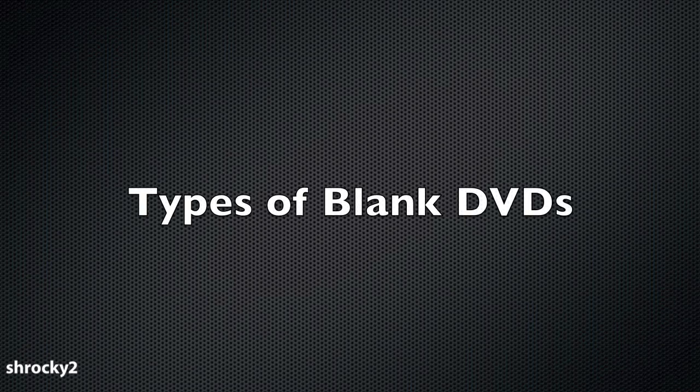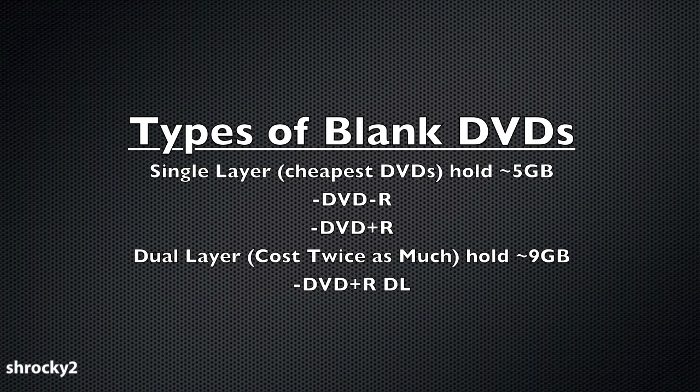At this point we're going to talk about the different types of blank DVDs. There are two main types: single layer and dual layer. Single layer are the most common — they're called DVD-R or DVD+R. They both hold about 4.7 gigs of data and you can get 50 of them for less than $20. Dual layer discs hold twice as much data as a single layer disc but cost twice as much. These discs are called DVD+DL and you can get 25 of them for about $25.